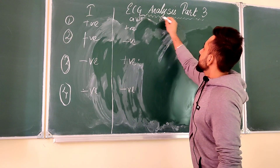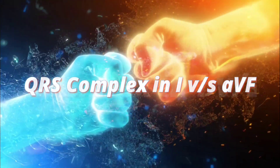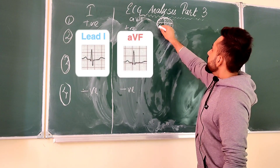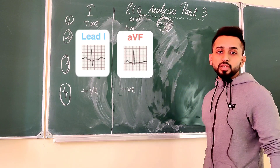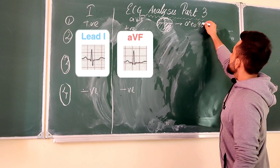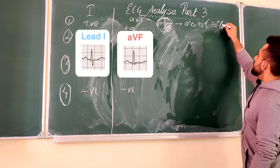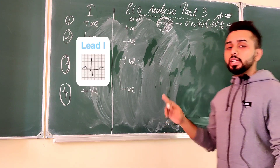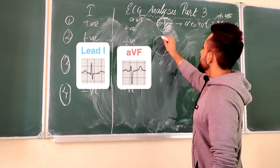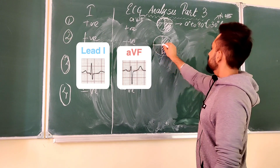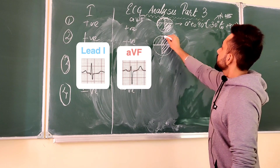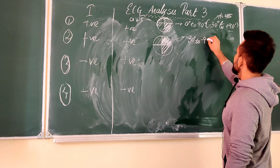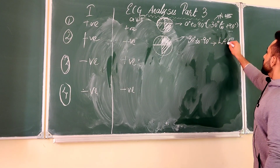In the first possible scenario, Lead 1 positive and AVF positive: the overlapping section runs from minus 30 degrees to plus 90 degrees, so this is the normal axis. In the second scenario, Lead 1 positive and AVF negative: the overlapping section is from minus 30 degrees to minus 90 degrees — this is left axis deviation, or LAD.